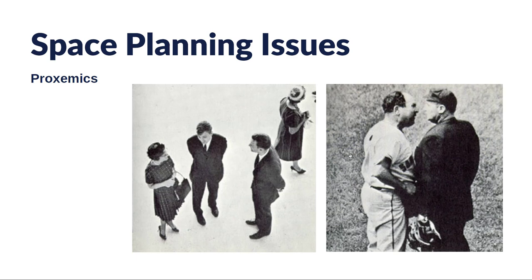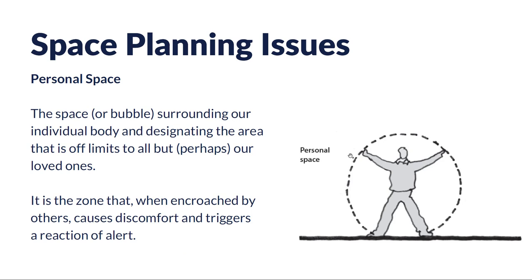Another thing to think about when considering space planning issues is proxemics — how close or far apart people want to be in different situations. The first thing to consider is personal space: that invisible bubble around us that really designates the area that's ours and what's off limits to nearly everyone else. It's that zone where, when people get too close and invade that personal space, it makes us uncomfortable and puts us on high alert.